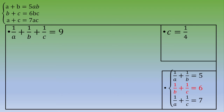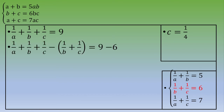To find A, we subtract the second equation: 1 over A plus 1 over B plus 1 over C minus (1 over B plus 1 over C) equals 9 minus 6. This gives 1 over A equals 3, so A equals 1 third.